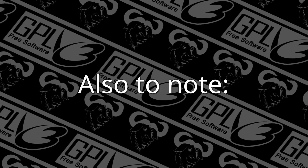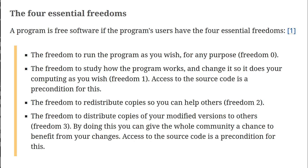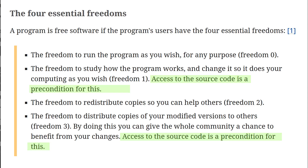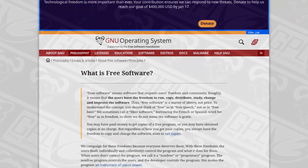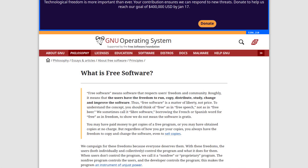Also to note, in order for freedoms one and three to even be feasible, the software has to have easily accessible source code. Whether this be via open source or a way to get repo access with a phone call or an email, it has to be available to everyone and anyone who can access the program. This is taken from GNU's website under the Free Software section — links to sources in the description, by the way.